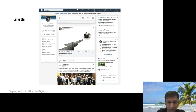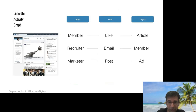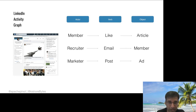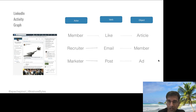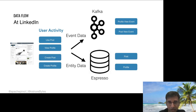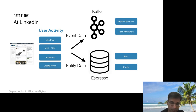Pretty much everything you do on LinkedIn — liking an article, connecting with someone, creating your profile — is recorded and modeled as an active web object model, a classic graph model showing what's happening on every event. You can think of a member liking an article, a recruiter emailing someone, or a marketer posting an ad. Every activity is classified as either event data or entity data.